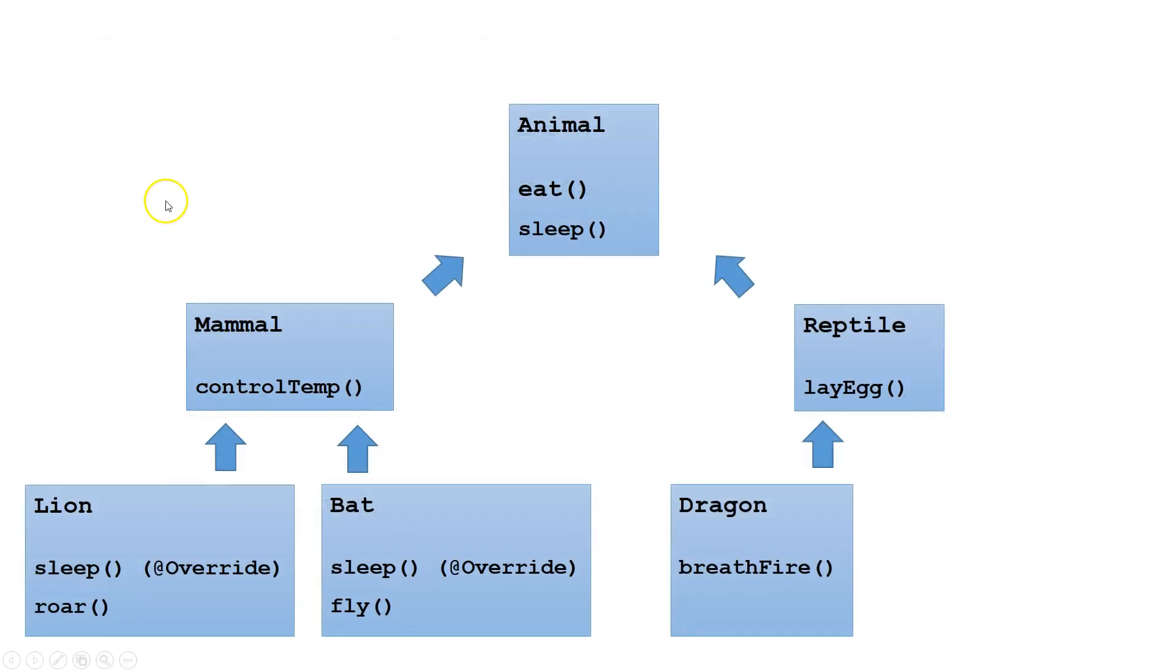Let's look at this arrangement of classes. For our purposes, let's assume all the methods in these classes are public and non-static. We have Animal up at the top. Then Animal has two subclasses, Mammal and Reptile. Mammal has two subclasses, Lion and Bat. Reptile has one subclass, Dragon.